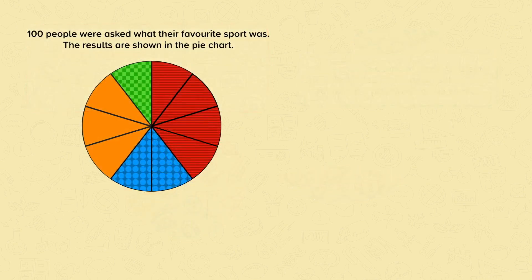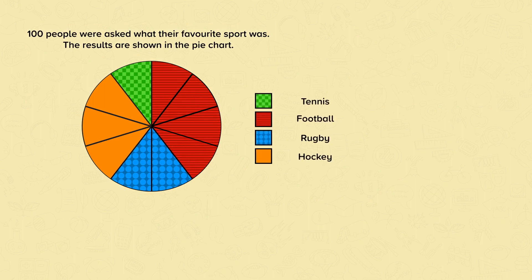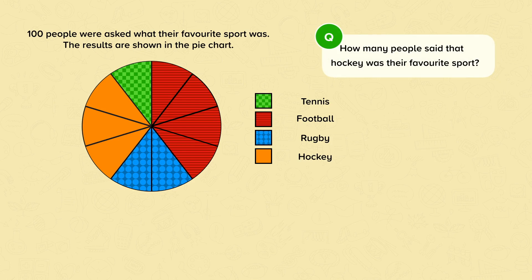A hundred people were asked what their favourite sport was. The results are shown in the pie chart. The question we need to answer is: how many people said that hockey was their favourite sport? In order to interpret the pie chart, we need to know how many people each segment represents.